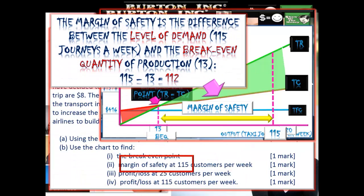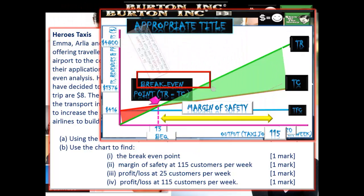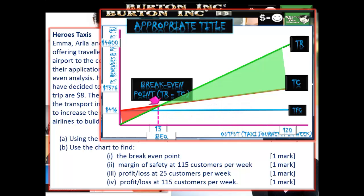Here's the definition: the margin of safety is the difference between the level of demand — 115 journeys a week, picked straight out of the question — and the break-even quantity of production, which we worked out to be 13. So the margin of safety: 115 minus 13 gives us 112. Another mark — thank you very much. The profit or loss at 25 customers per week.